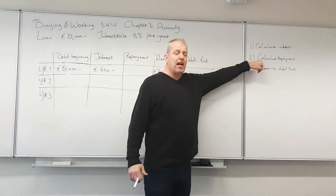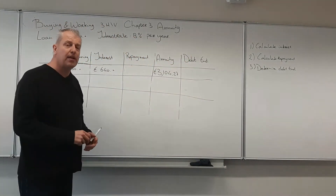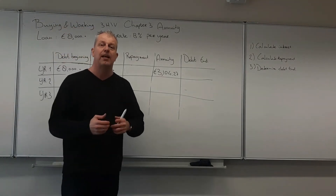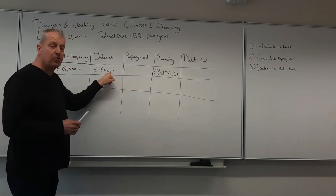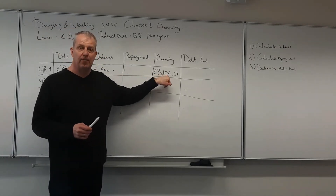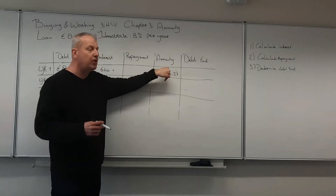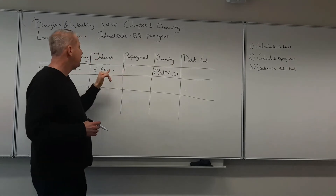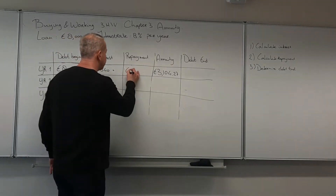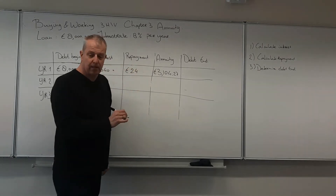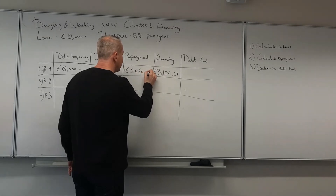The second step is to calculate the repayment. You know that the annuity consists of both interest and repayment. Now that we know what the interest is, the rest of the annuity amount consists of repayment. So we take the annuity and subtract the interest, which gives us 2,464.27 euros.